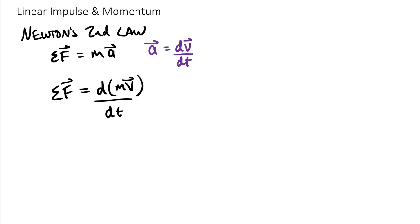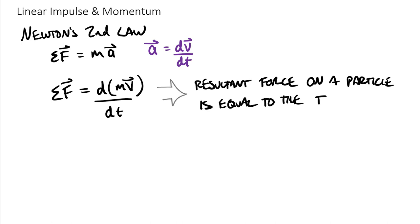So the way we can say this in words is that the resultant force on a particle is equal to the time rate of change of the linear momentum. And you'll likely remember from physics that linear momentum is mass times the velocity vector. That's this term right in here, the linear momentum.